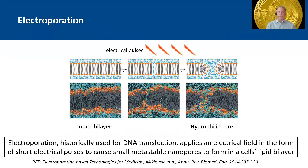Electroporation is the permeabilization of cell membranes in order to increase the local transfer of chemicals, drugs, or DNA into the cell. It has been historically used for DNA transfection of genetic material, and it applies an electrical field in the form of short electrical pulses. This causes small metastable nanopores to form in the cell's lipid bilayer.